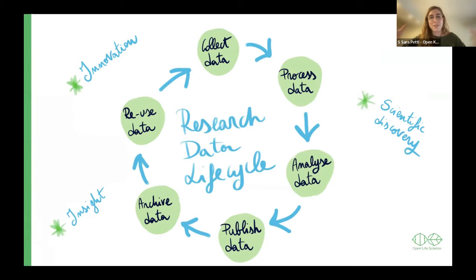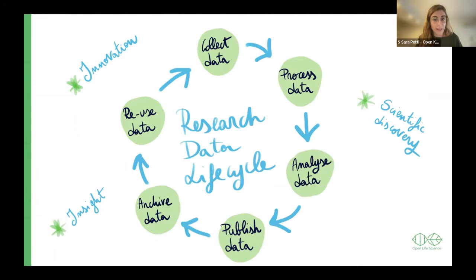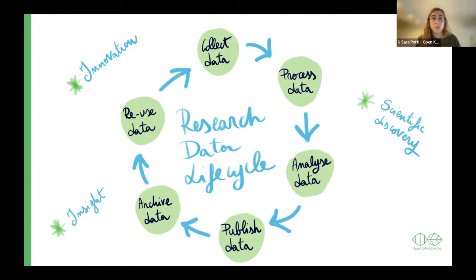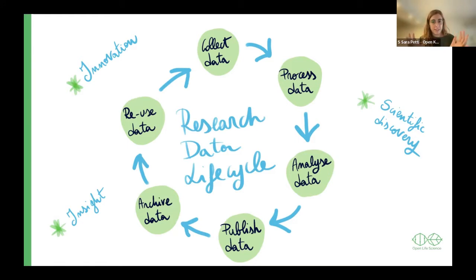Research data goes through many different phases. We start with collection of data, then process and clean it, then analyze it. After that, if we have findings, we can publish the data, possibly archive it in a place that's easily findable by other people, and possibly reuse it. Once the data can be reused, this lifecycle stays open. It's very important — if we want innovation and insight to thrive and make further scientific discovery — that this data lifecycle stays a cycle and doesn't become a line with a starting and ending point.